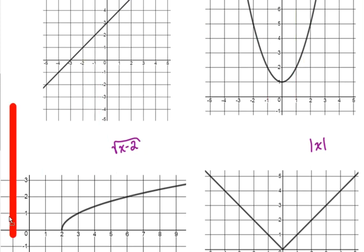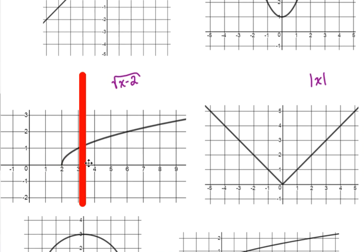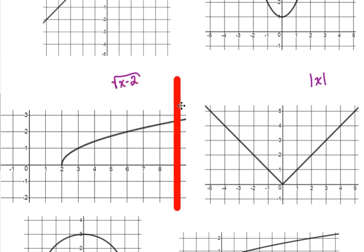Notice I'm using the functions that we have been using as examples, the square root of x minus 2. Now, it doesn't exist wherever here to the left, but where my graph does start, and for any point past that, it clearly passes the vertical line test.